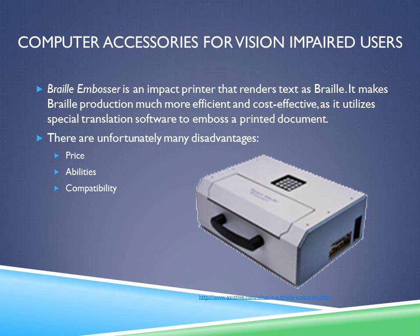Another type of accessory is a Braille embosser — an impact printer that renders text as Braille. It makes Braille production much more efficient and cost-effective by utilizing special translation software to emboss a printed document. There are many disadvantages, including price, which can range from $2,000 to $80,000 depending on the user's needs. Compatibility is another issue as it may be incompatible with the user's computer platform. Speed may be very slow in terms of CPS (characters per second). Portability and adjustable height are also factors. Some units are very noisy, even requiring a soundproof case. The ability to print single-sided or double-sided, and in both ink and Braille, is another consideration — especially important in households with both blind and sighted users.